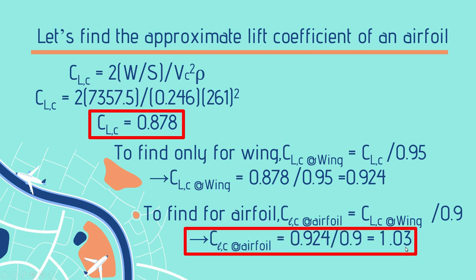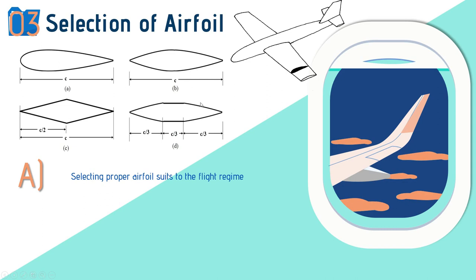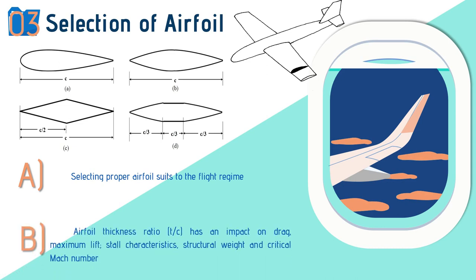One of the most important parameters in wing design is selecting a proper airfoil based on flight speed. Airfoil selection can be performed using the speed-based figure: Figure A is suitable for subsonic flight, while Figures B, C, and D are suitable for supersonic or high-speed aircraft. Select the profile appropriate to your aircraft. Airfoil thickness ratio has an important impact on drag, lift coefficient, stalling characteristics, structural weight, and critical Mach number.